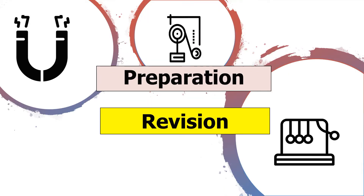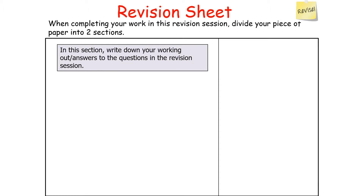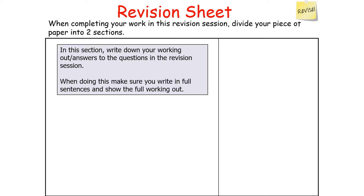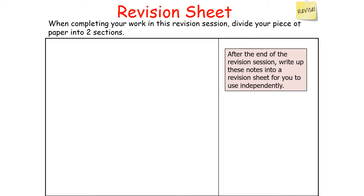How to prepare for this revision session: when completing work, divide your piece of paper into two sections. Make the left-hand side larger than the right-hand side. In the left section, write down your working out and answers to the questions, making sure you write in full sentences and show your working. On the right-hand side, write down any useful information or hints and tips. At the end of this revision session, write up these notes into a revision sheet for independent use.